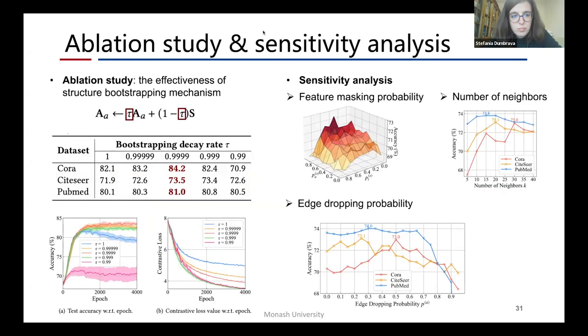We also perform ablation studies to demonstrate the effect of structural bootstrapping mechanism, which show that an appropriate selection of tau can lead to the best performance, which is 0.9999 for the three node classification datasets. Finally, we perform some parameter studies to show the sensitivity of our method to different hyperparameters, including feature masking probability, edge dropping probability, and the number of neighbors for sparsification.